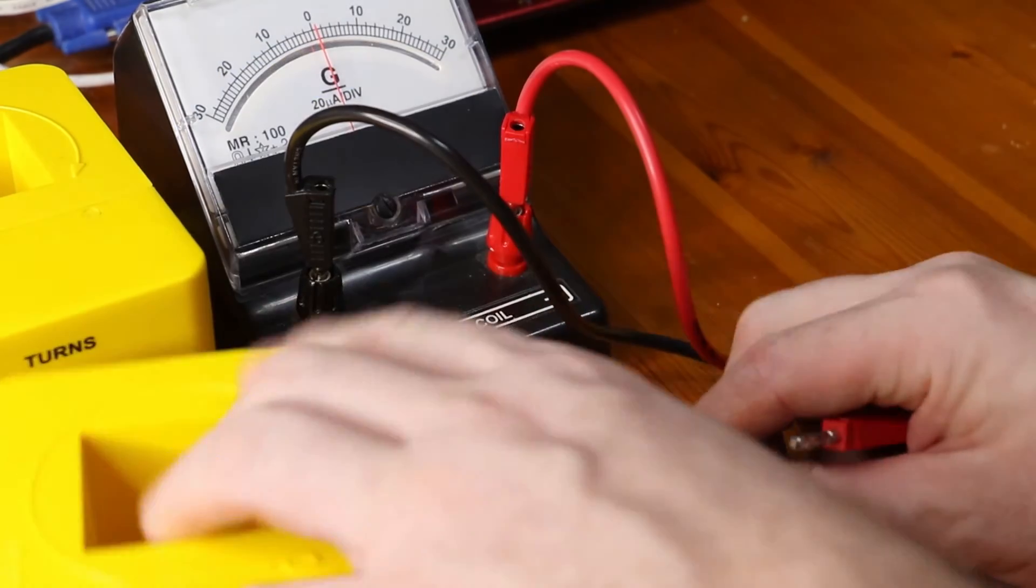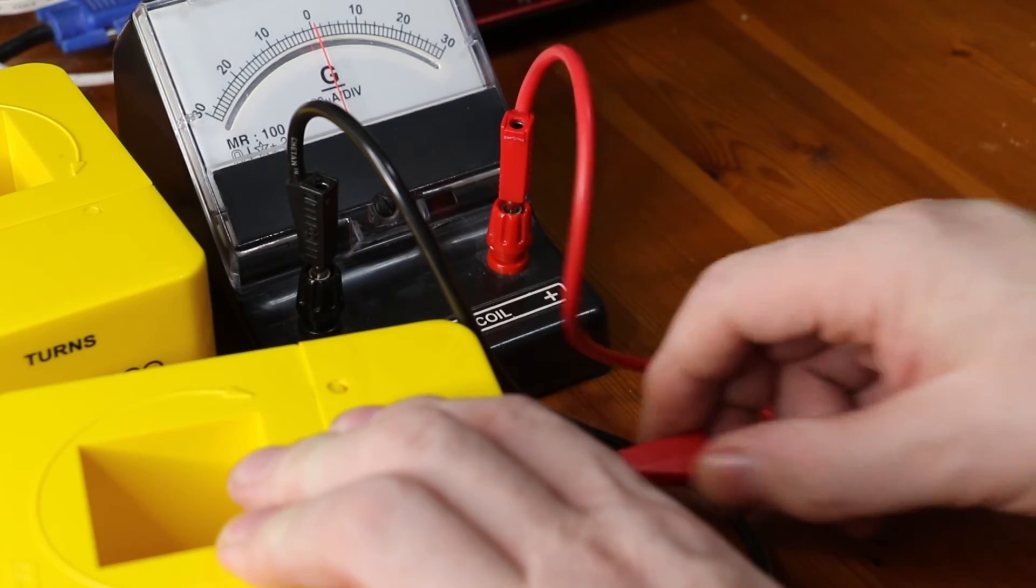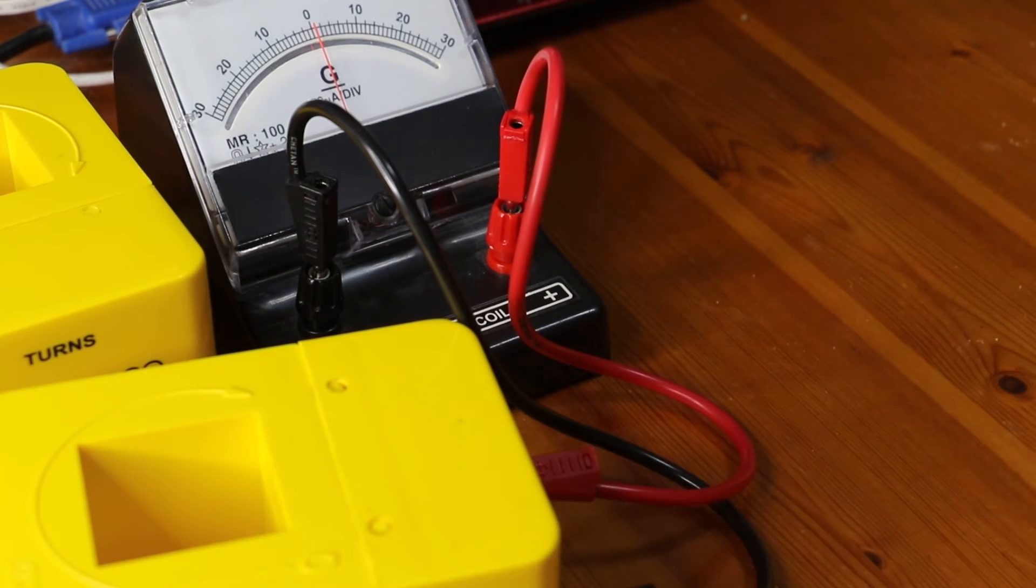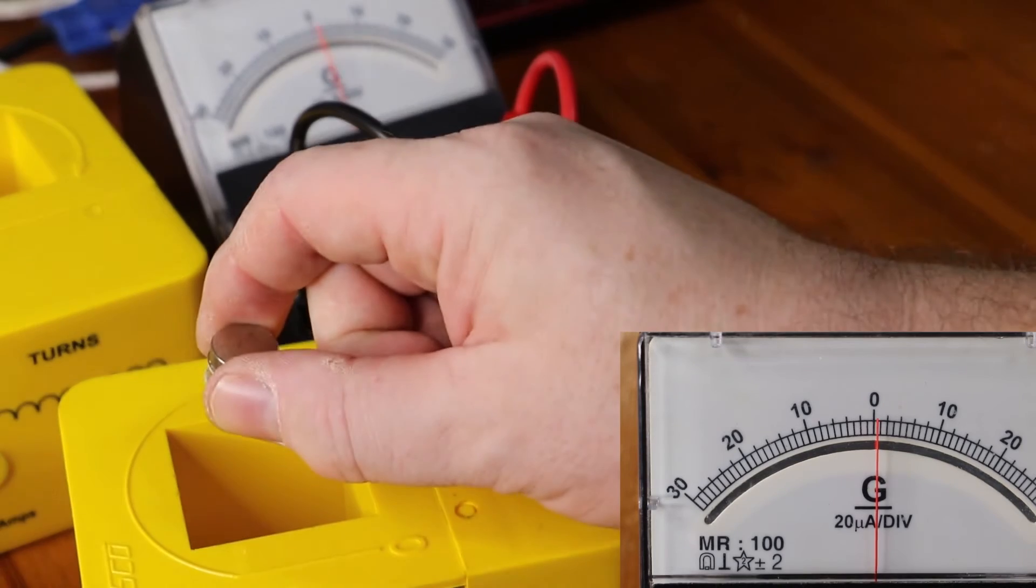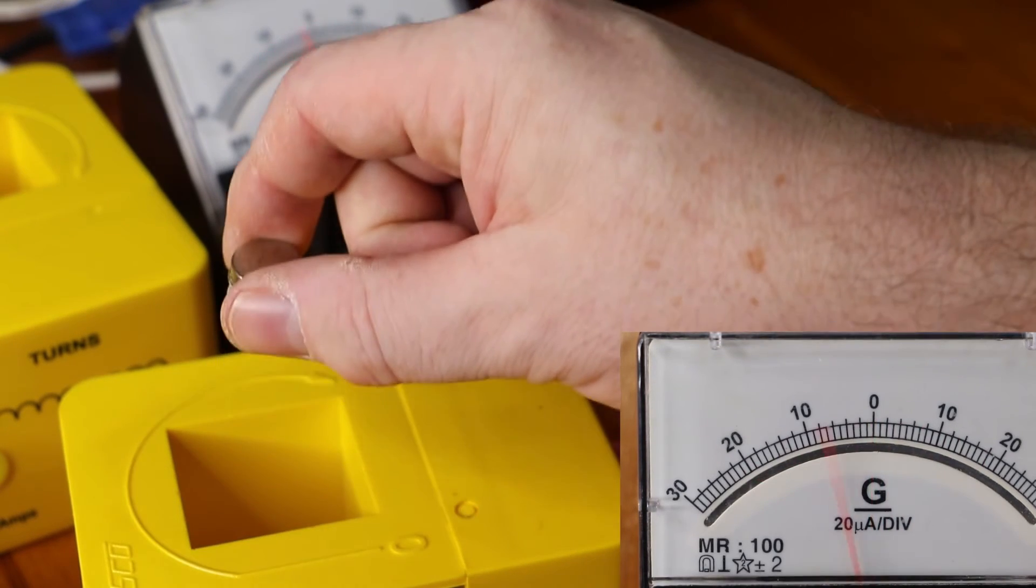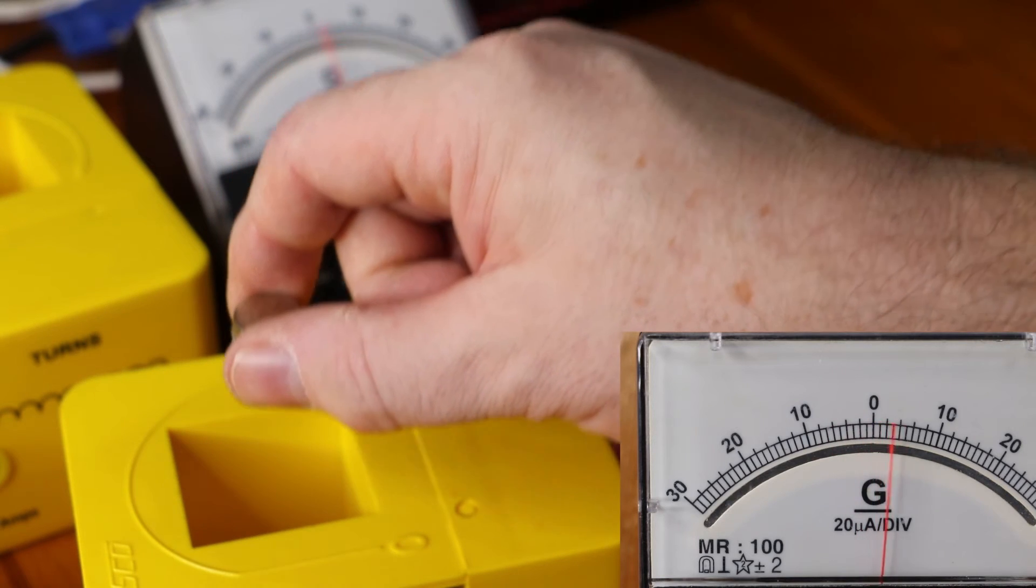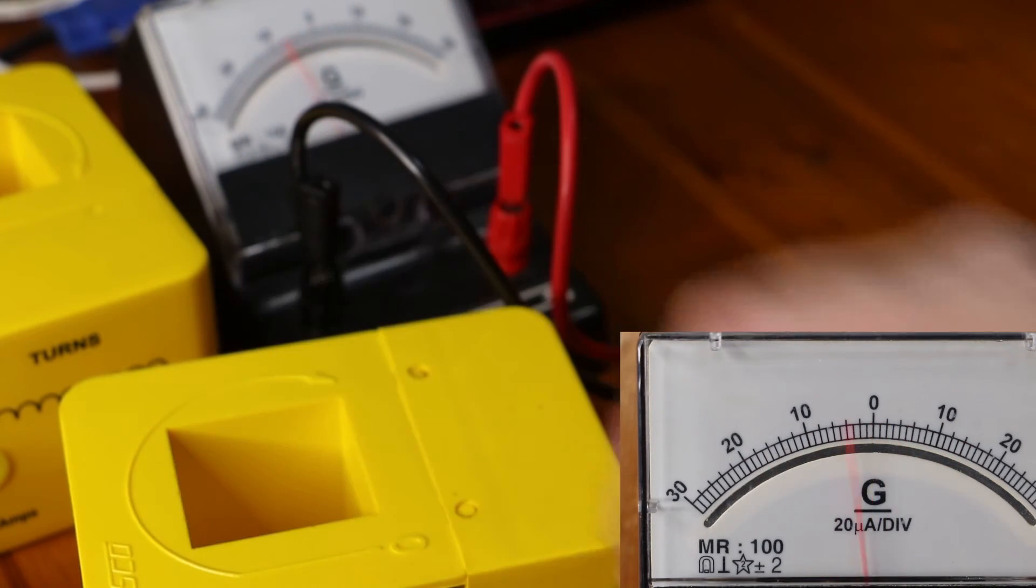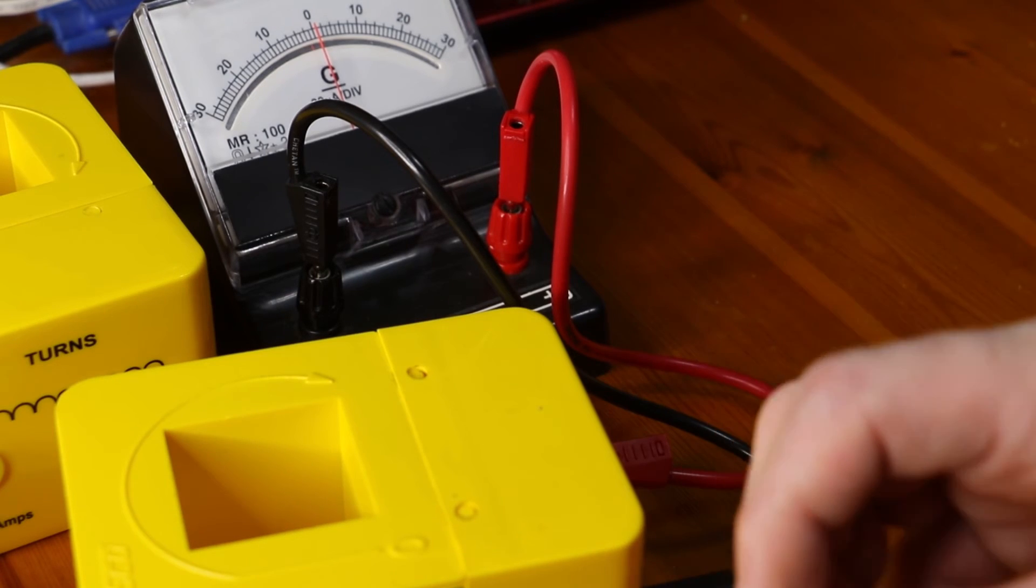Let's see what happens if I take this with a 1000-turn coil. We would predict that we're going to get a bigger deflection and indeed slowly I get a much bigger deflection, basically similar to moving quickly in the 50-turn coil.